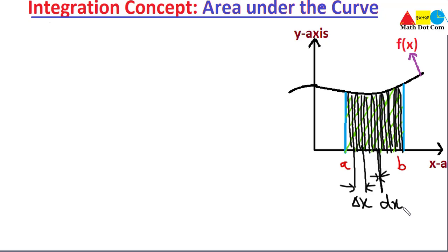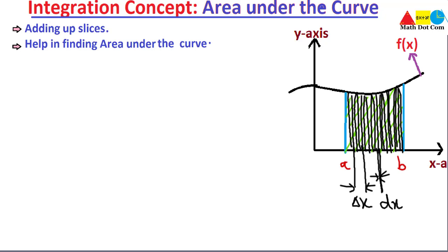It will be difficult to use the summation method to add all these pieces, because as the width approaches zero, your rectangular pieces approach infinity — you have to add an infinite number of areas. To tackle this situation, we use integration, which helps in adding up the slices easily and quickly and makes finding the infinite number of slices manageable.